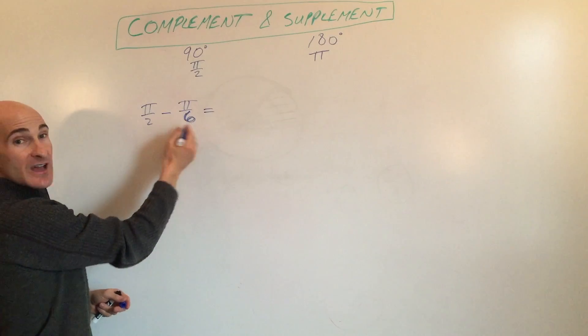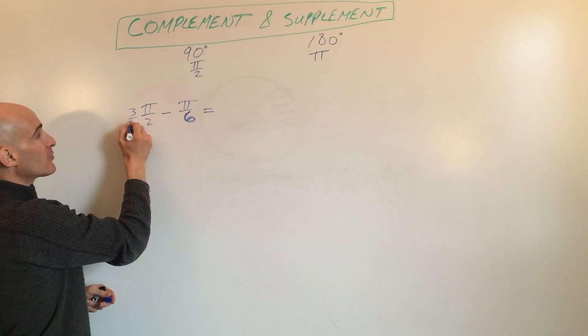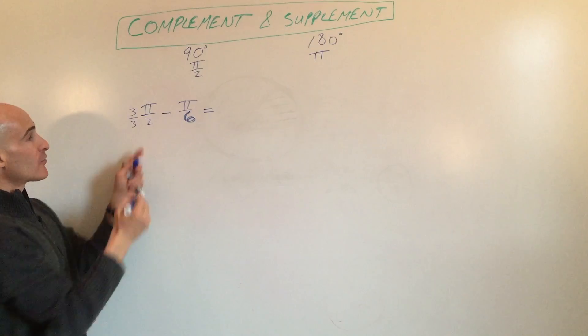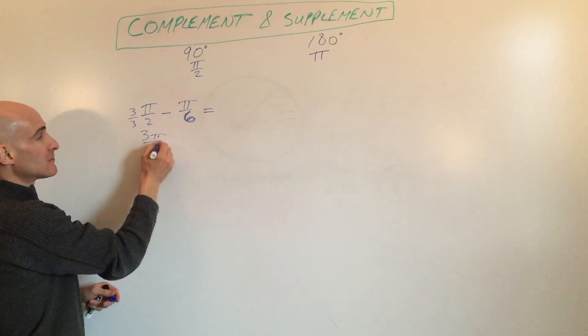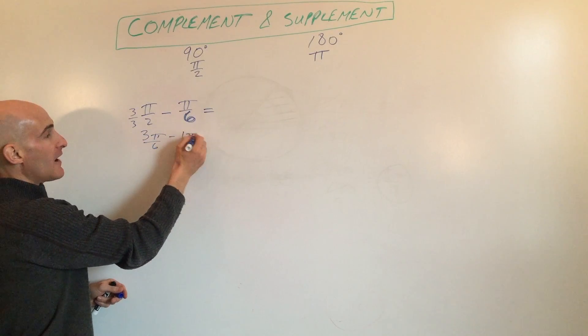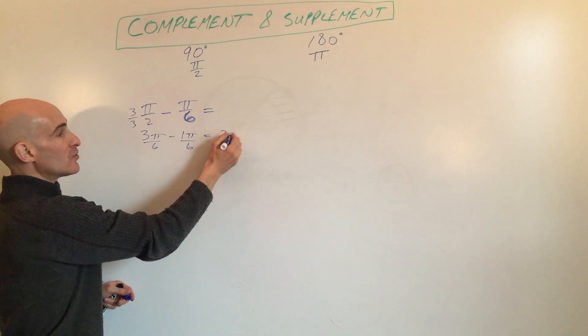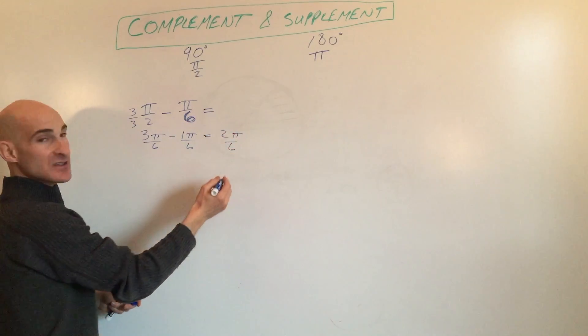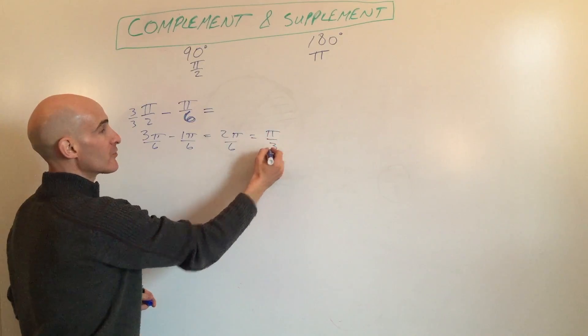Of course, we have to get common denominators, so I'm going to multiply this by 3 over 3. So that gives you 3π over 6 minus 1π over 6, which equals 2π over 6, which we can reduce to π over 3.